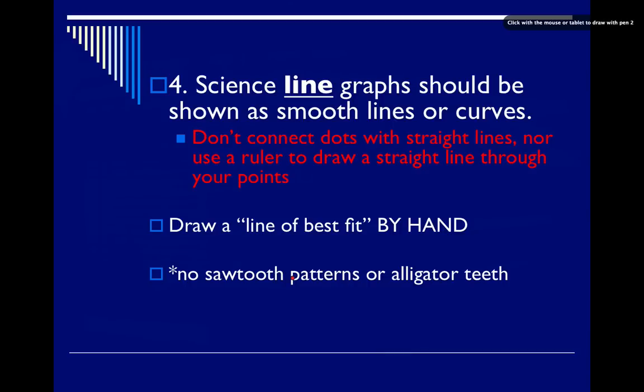we're going to draw what's called a line of best fit. So, this line is going to go through most of your data points, but it's going to do so in a very smooth way. And we're going to do this by hand. So, what we don't want to see is what we typically call a sawtooth pattern, which looks like that, or alligator teeth, you know, the jagged up and down motion from point to point. We do not want to see that. So, let's take a look at some examples here.